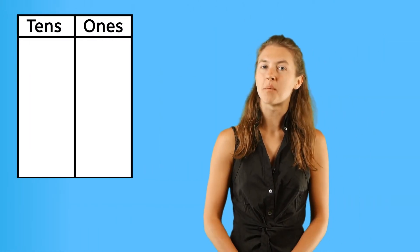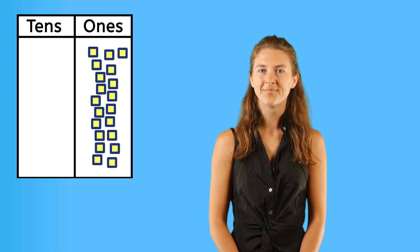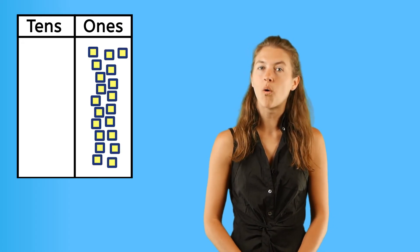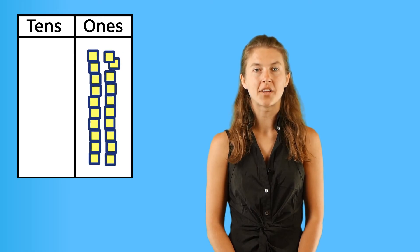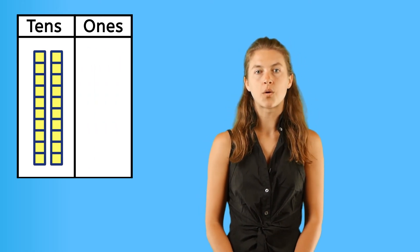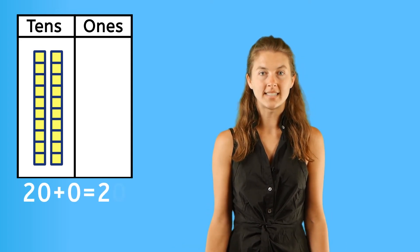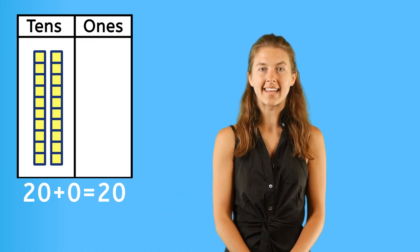Finally, what is this number represented on the place value chart? We can count each block, or if we use the pattern of tens and group these ones into tens, we see we have two tens, or twenty. So twenty plus zero ones equals twenty! You got it!